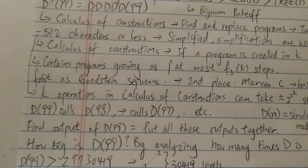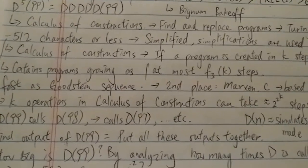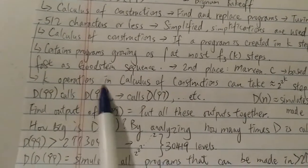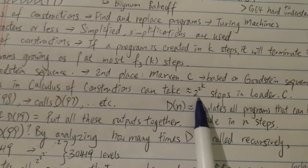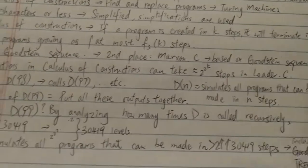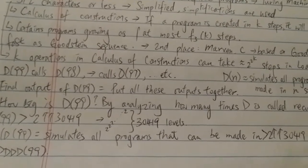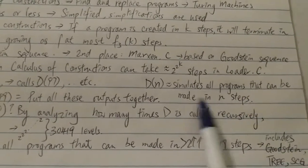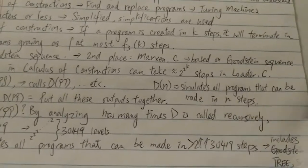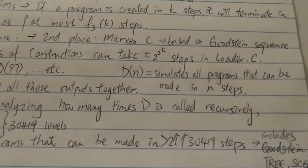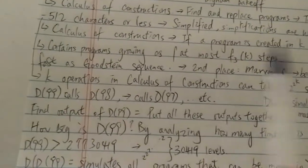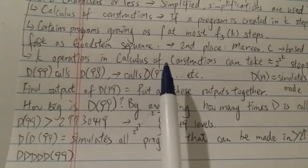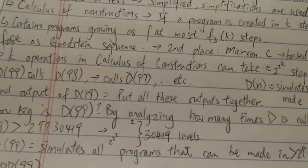Loader's number is a simplified version — a lot of simplifications are used. Specifically, k operations in the calculus of constructions can take around 2^(2^k) number of steps in Loader's C program. So what exactly is the d(n) function? The d(n) function basically simulates all programs that can be made in n number of steps. You can pause the video to digest that. So d(99) calls d(98), which in turn calls d(97), which calls d(96), and so on.